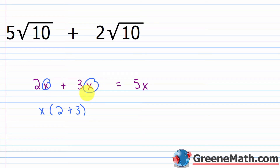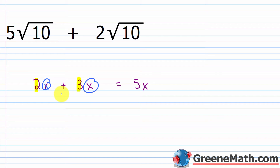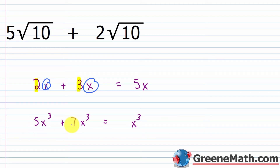If I factored it out, I'd have a 2 left and a 3 left. So 2 plus 3 gives 5, multiplied by x gives 5x. We shorten this by saying the x is common, so just add the coefficients and put x at the end: 2 plus 3 is 5, giving 5x. Similarly, 5x cubed plus 7x cubed — since x cubed is the same variable to the same power, just add the coefficients: 5 plus 7 is 12, giving 12x cubed. It's basically the exact same process with radicals.